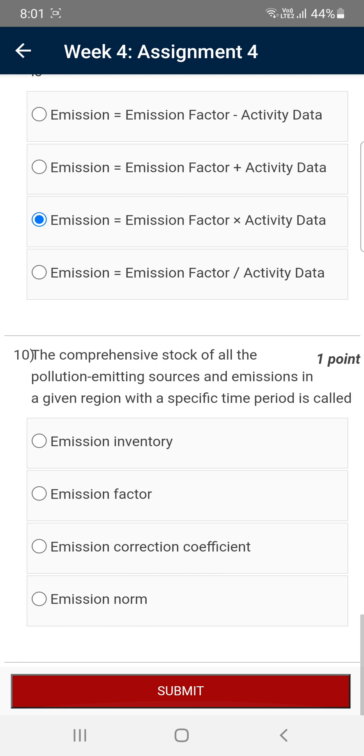Moving on to the final question, the tenth one: The comprehensive stock of all the pollution emitting sources and emissions in a given region with a specific time period is called... It is called emission inventory, that is the first option. First option is the correct answer for the tenth question.